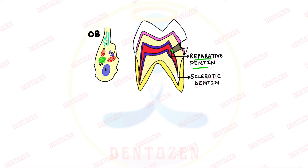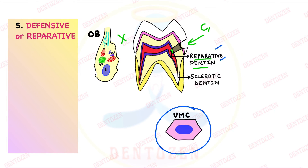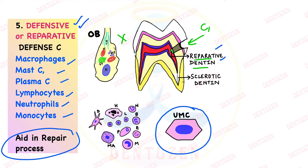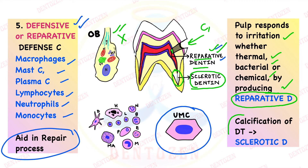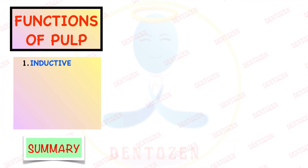The fifth function is the defensive or reparative function. When there is injury from caries or trauma, if odontoblast cells die, new cells form from the undifferentiated mesenchymal cells of the pulp, and these help in the formation of reparative dentine. Defensive cells present in the pulp — macrophages, mast cells, plasma cells, lymphocytes, neutrophils, and monocytes — help in the repair process against thermal, bacterial, or chemical irritation. Additionally, when odontoblast cells are still present, they can seal the dentinal tubules through calcification, forming sclerotic dentine.